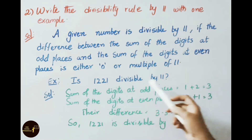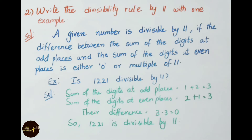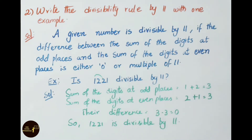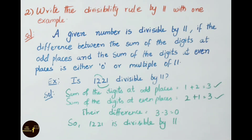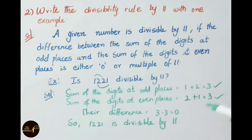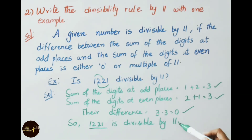Example: Is 1221 divisible by 11? Sum of digits at odd places (1st place, 3rd place): 1 + 2 = 3. Sum of digits at even places (2nd place, 4th place): 2 + 1 = 3. Their difference is 3 − 3 = 0. Since the difference is 0, the given number 1221 is divisible by 11.